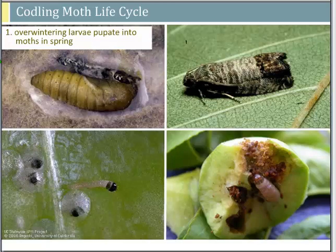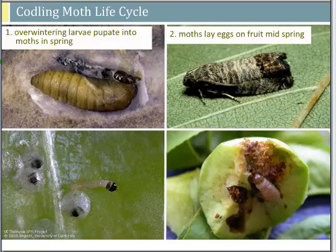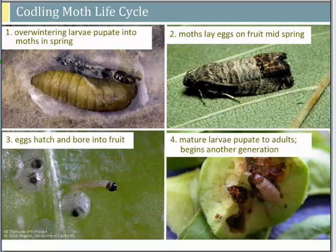Managing any tree pest requires knowing the biology so you know when they're active and when to treat. Codling moth spends the winter as a larva, then in spring as temperatures warm, it pupates to an adult moth. Moths start emerging around bloom of apple — we've already caught some in our traps. They mate and lay eggs on the fruit, and the larvae bore into the fruit, feeding on the seeds. Around mid to late June, larvae will mature, drop out of the fruit, pupate, and a second generation of moths will emerge.